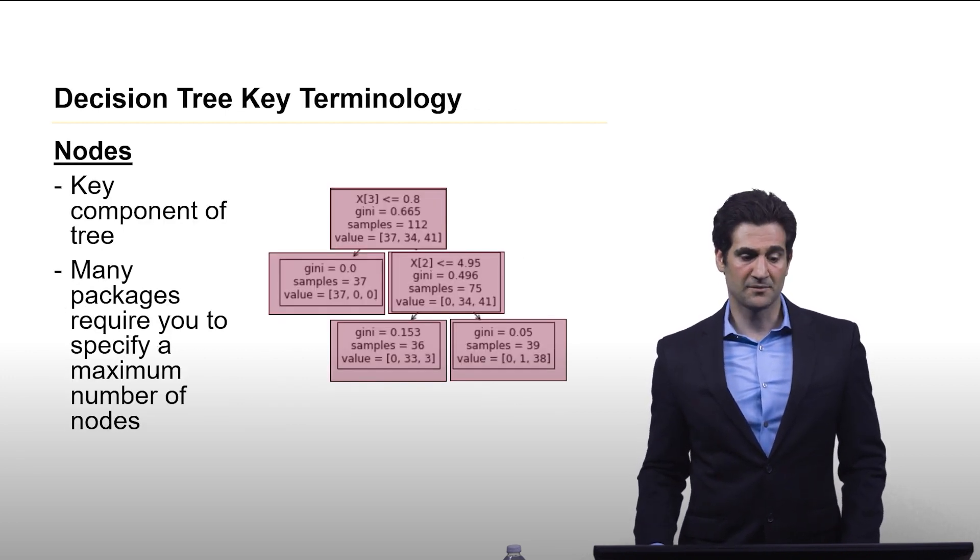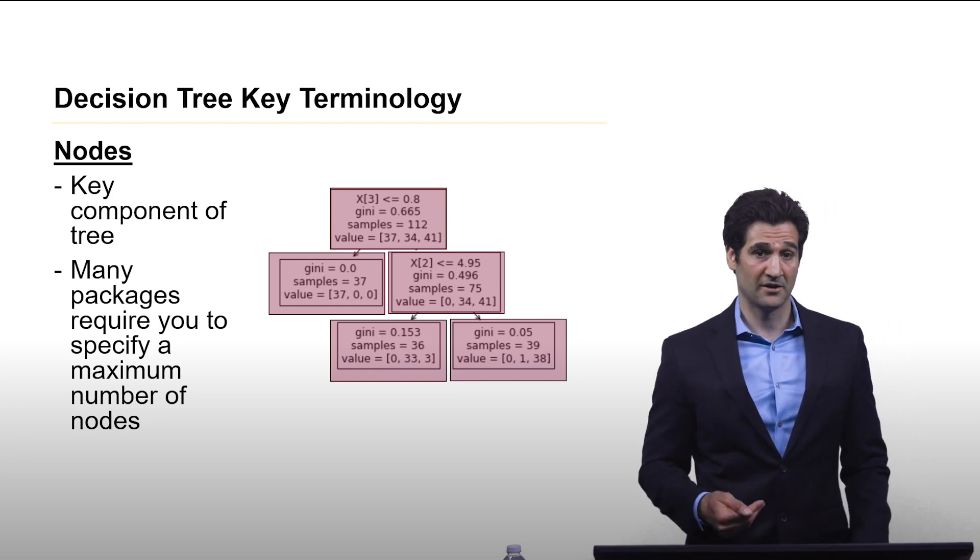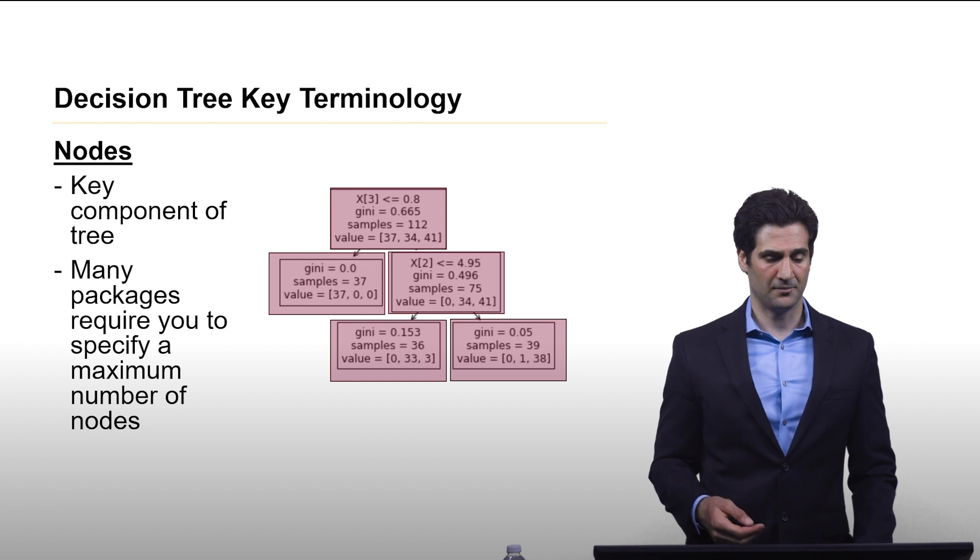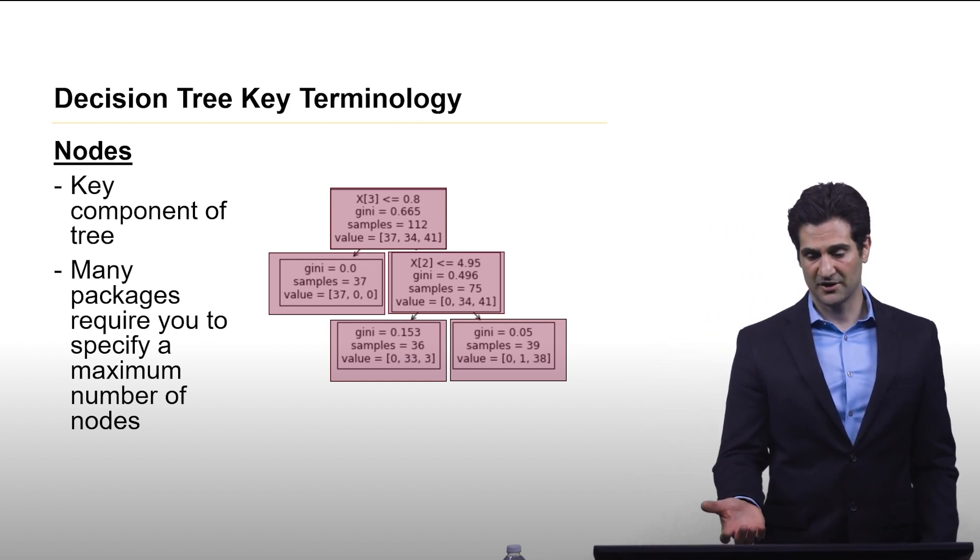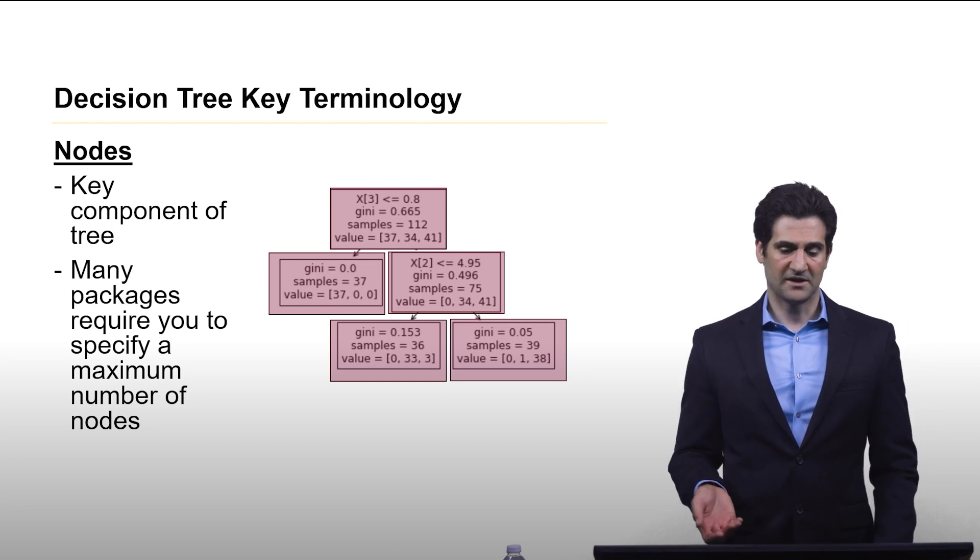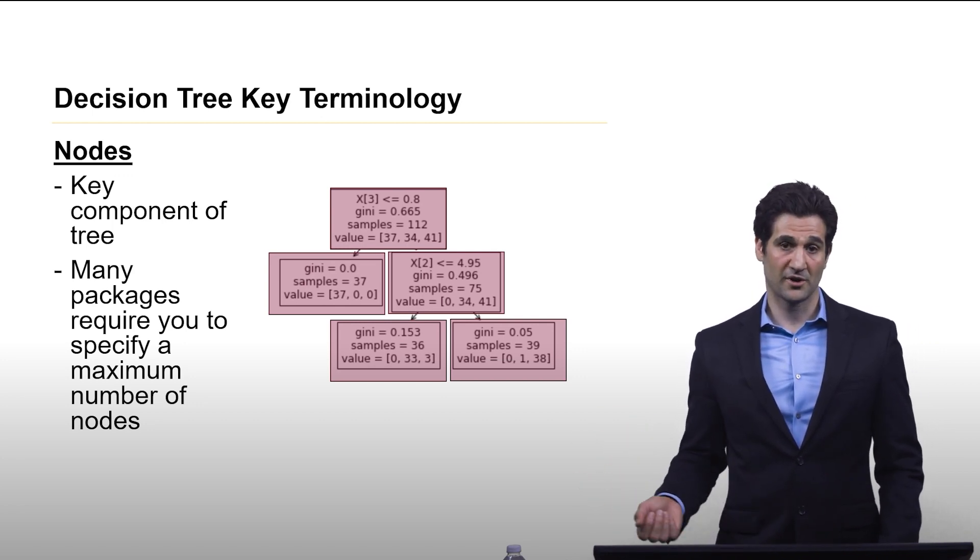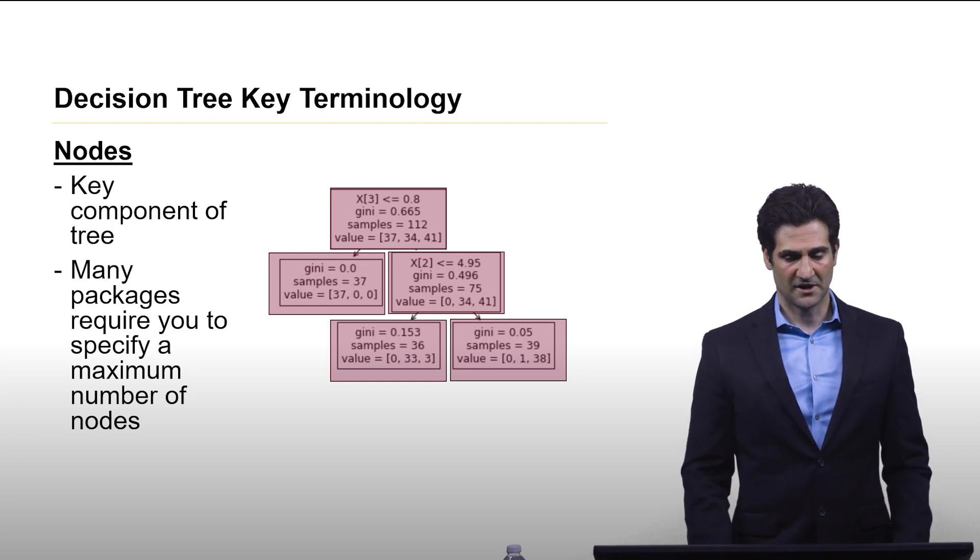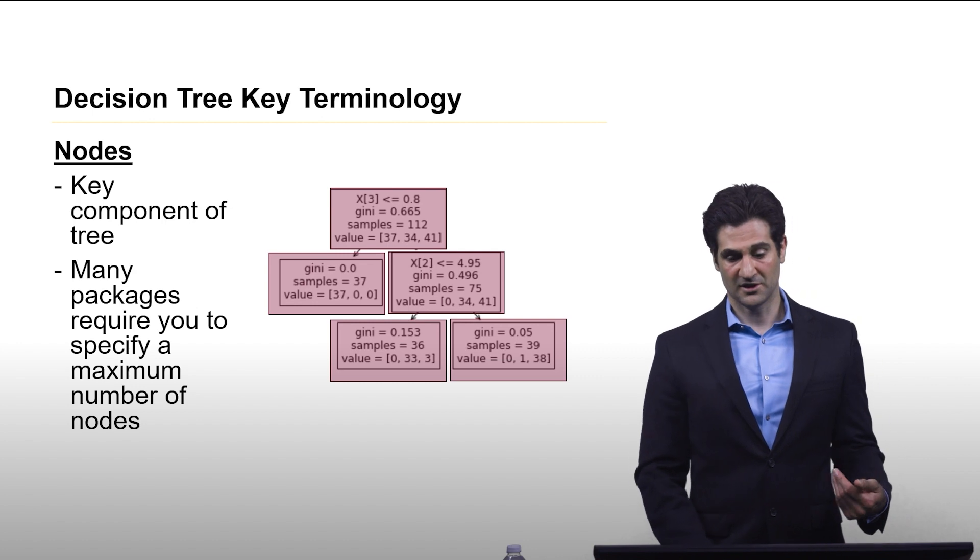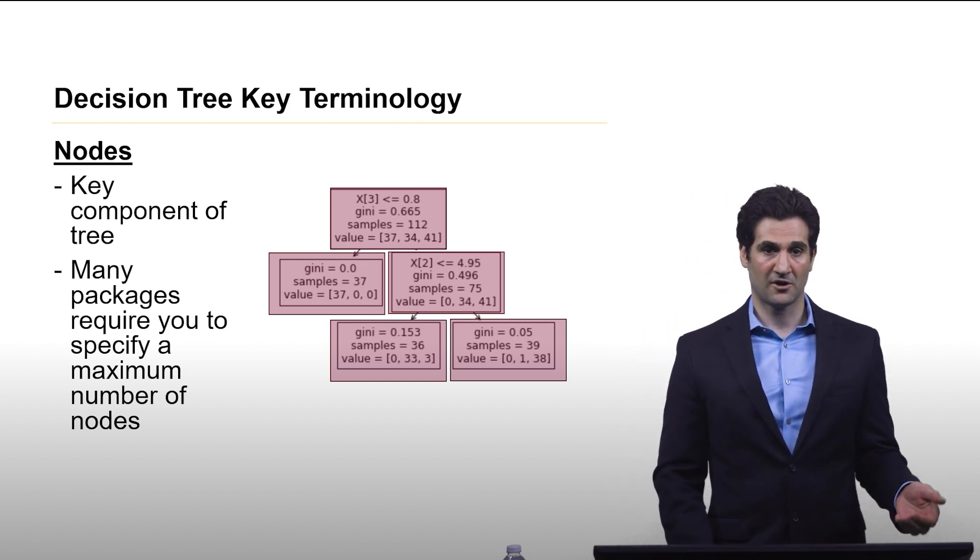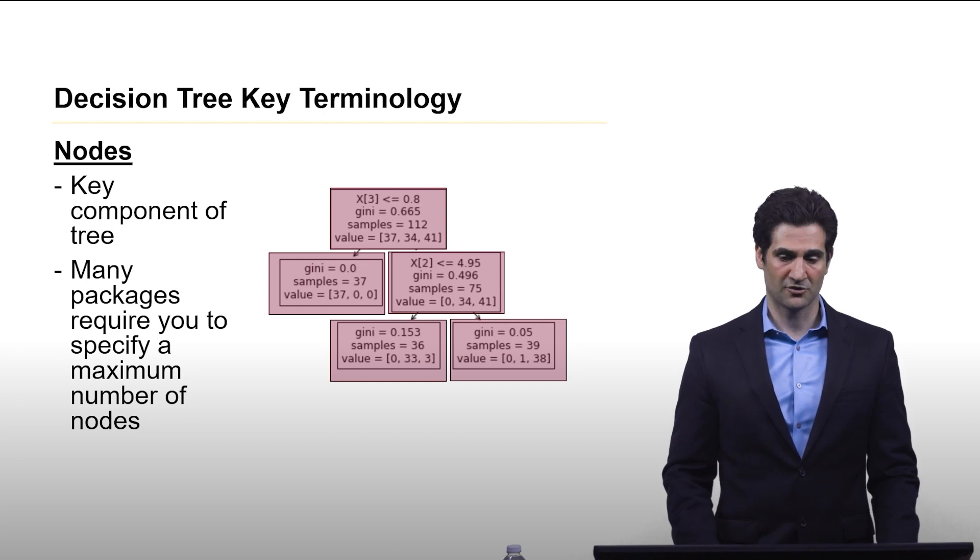So let's look at some key terminology about the decision tree itself that will help us understand the training process. So first is the node. So this is everything in the decision tree. These are all nodes. And it's either where a decision is instantiated or it's where a conclusion is reached. And specifying either the maximum number of nodes or the length from the top to the bottom node are common hyperparameters in many software packages for training these things.